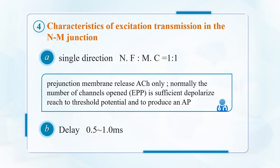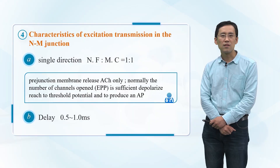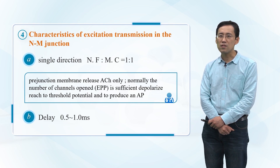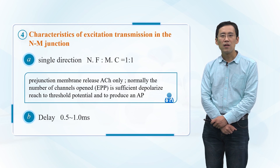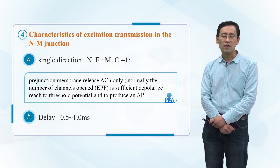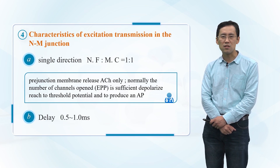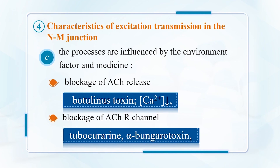The characteristics of excitation transmission in the neuromuscular junction include: it is a single direction; the ratio of nerve fiber to muscle cell is one to one; the pre-junction membrane releases ACh only. Normally, the number of channels opened is sufficient to reach the threshold potential and produce an action potential. There is a very short delay of 0.5 to 1 millisecond.